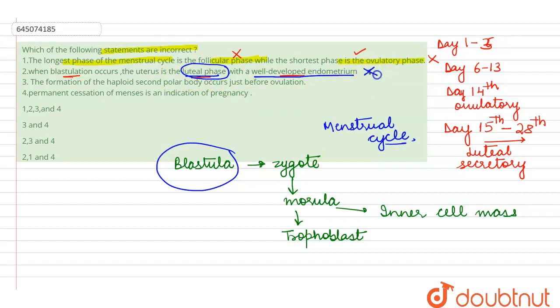Now talking about the third statement, formation of haploid secondary polar body occurs just before ovulation. So it occurs—first of all, the first polar body occurs just at the time of ovulation and the second polar body is formed just after fertilization. So it does not occur before ovulation, so this is wrong.